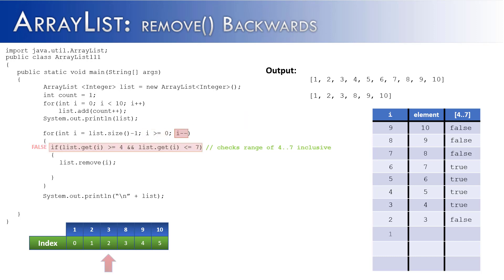After removing element 4, i decrements to 2 — 2 is greater than or equal to 0 — and we move through the rest of the ArrayList unimpeded because there are no more elements to be removed. We get to the end of the ArrayList, and all the items have been correctly removed. Moving backwards through the ArrayList did work.